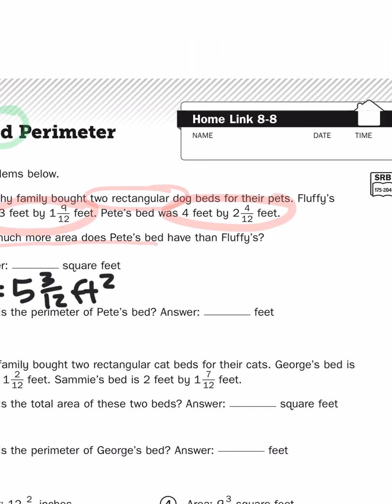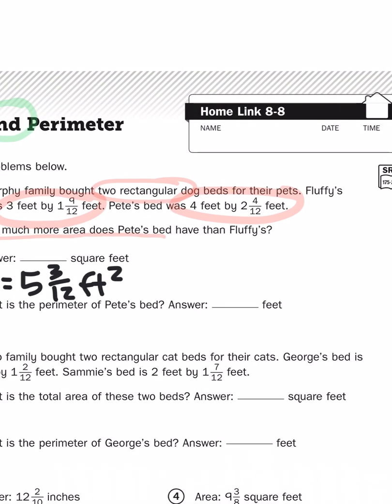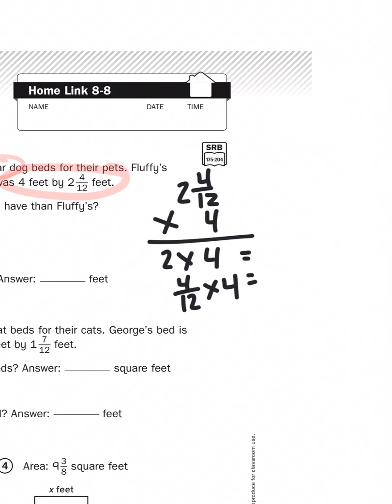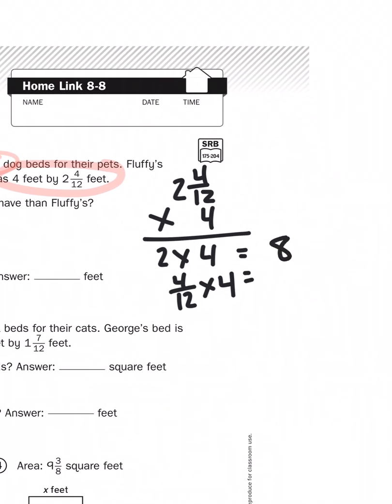So now I need to figure out the area of Pete's bed. Pete's bed is 4 feet by 2 and 4 twelfths feet. 2 and 4 twelfths times 4. This time I'm going to use partial products. I'm going to multiply 2 times 4 and 4 twelfths times 4. 2 times 4 is 8, of course. 4 times 4 is 16, 16 twelfths.